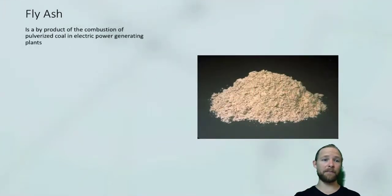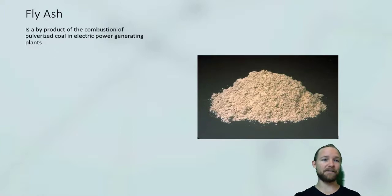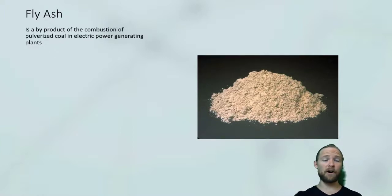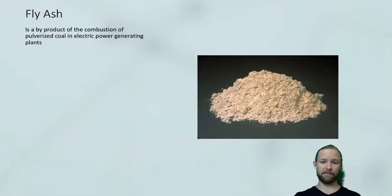The first supplementary cementitious material we're going to look at, and it is actually the most abundant on the planet, is fly ash. This is a by-product of the combustion of pulverised coal in electrical power plants.